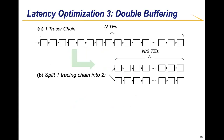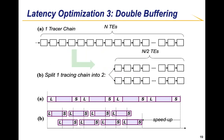The third latency optimization is double buffering. In this method, we split the tracing accelerator into two even parts. By doing so, the load and store time can overlap with the tracing operation time. As we hide the load and store time, the tracing accelerator can reduce the runtime and achieve additional speedup.